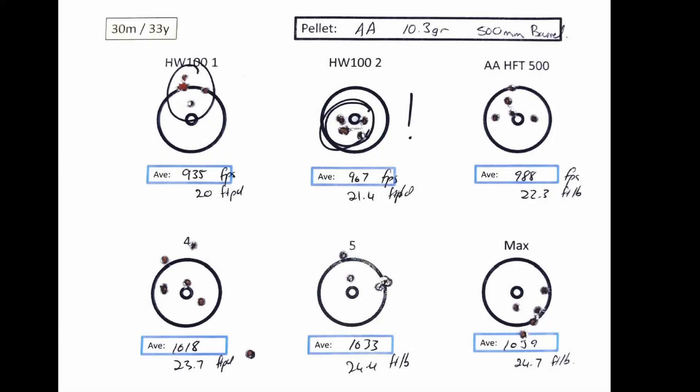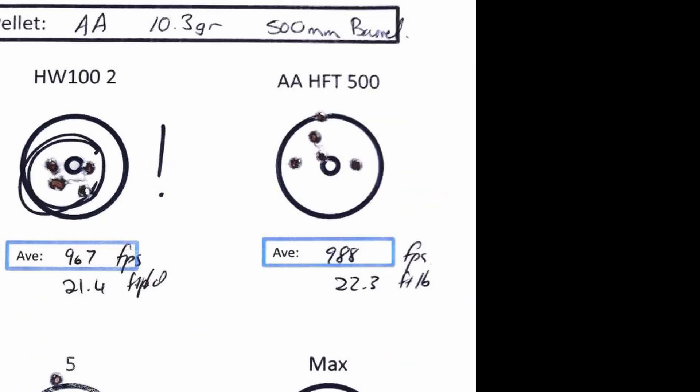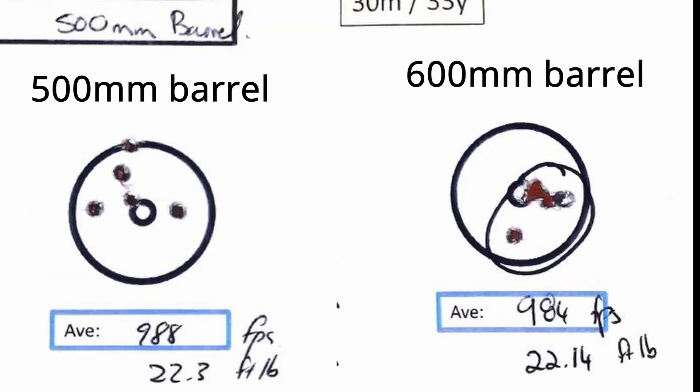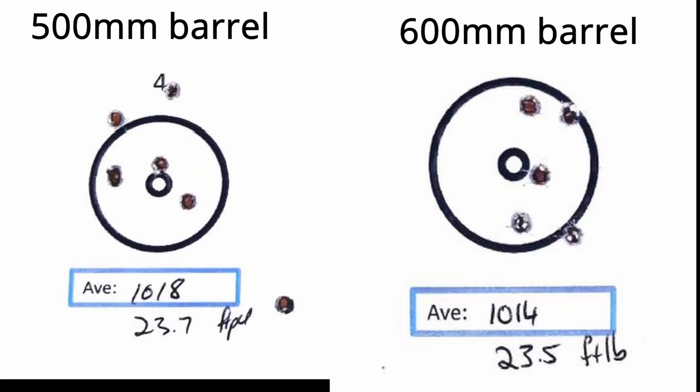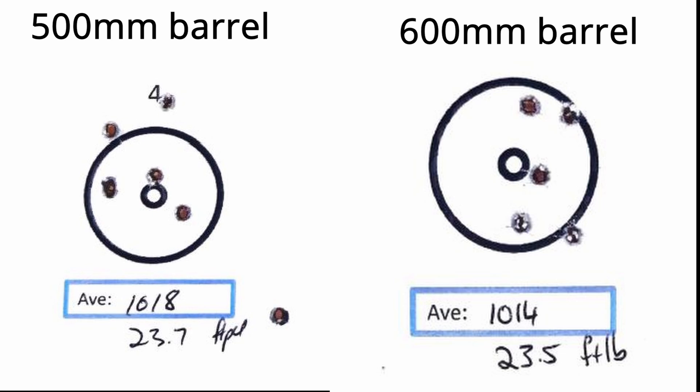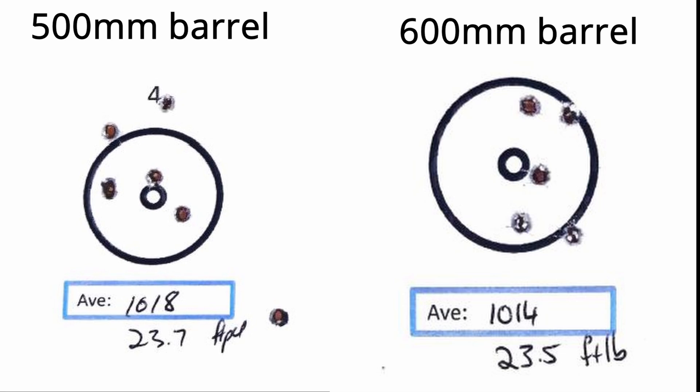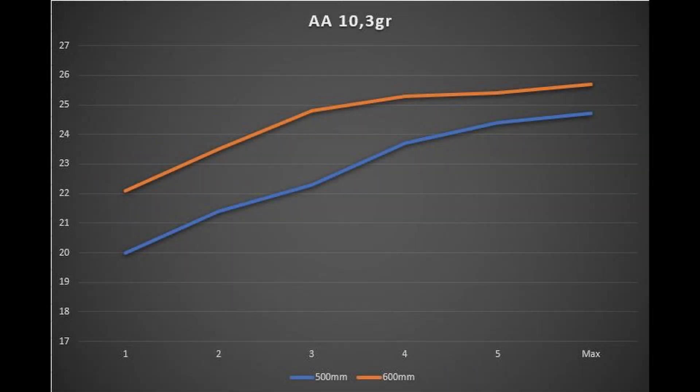The only reason for the better grouping with the 500 millimeter barrel is because of the slower speed. Have a look at the two when the speed is almost the same—the difference between the 500 millimeter and the 600 millimeter barrel's groupings, it doesn't seem that there's much of a difference between the two barrels, although the 600 tends to group slightly better than the 500 millimeter at this stage.